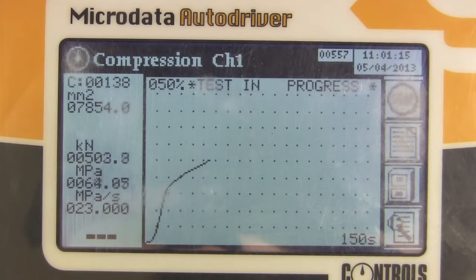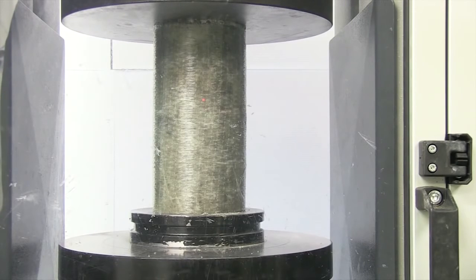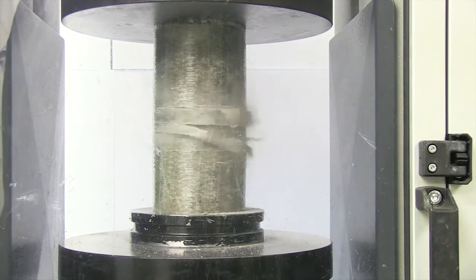When close to double the compressive forces exerted on it, finally, the Sika Wrap column fails.